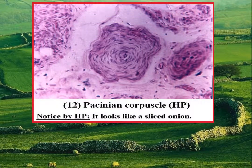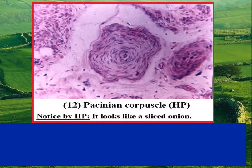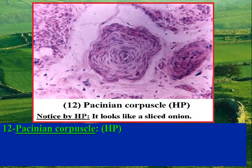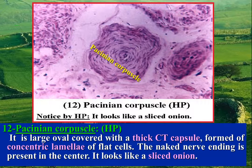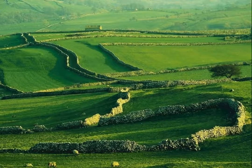TS of skeletal muscle high power to demonstrate Pacinian corpuscle: the Pacinian corpuscle is a large oval body covered with a thick connective tissue capsule formed of concentric lamellae of flat cells. The naked nerve ending is present in the center. It looks like a sliced onion.